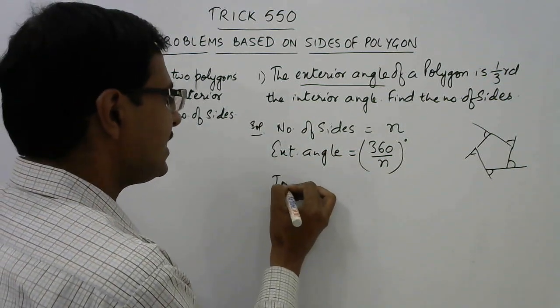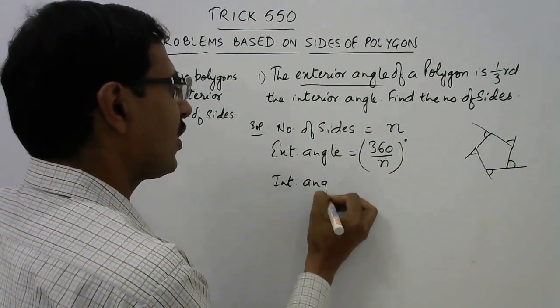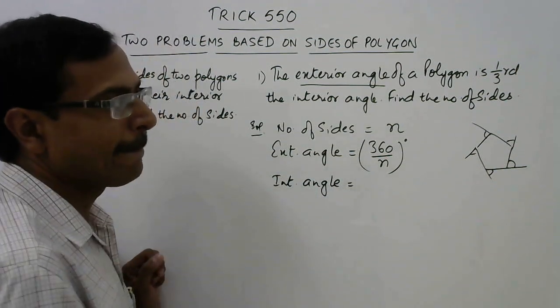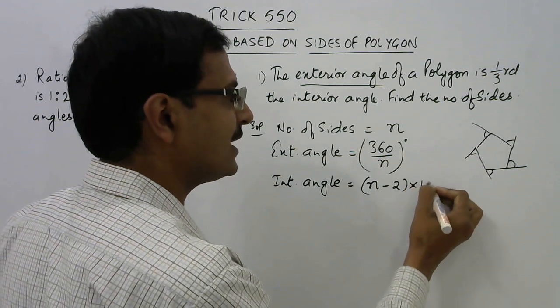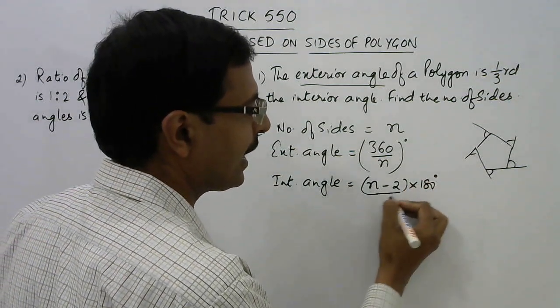Similarly, each interior angle of a polygon is found out by the formula (n minus 2) times 180 degrees upon n.